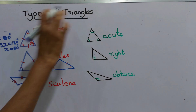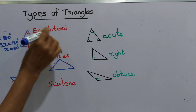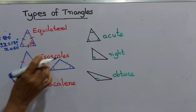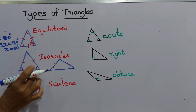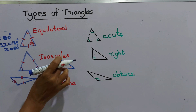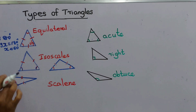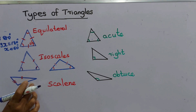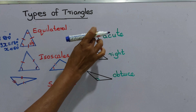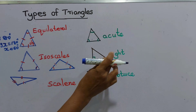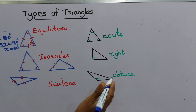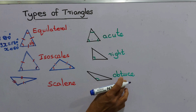Now you have learned many names and types of triangles. An equilateral triangle has all sides equal and all corners equal. An isosceles triangle has two equal sides and two equal base angles. A scalene triangle has all sides of different lengths. Classified by angles: an acute triangle has all three angles acute, a right triangle has a right angle, and an obtuse triangle has an obtuse angle.